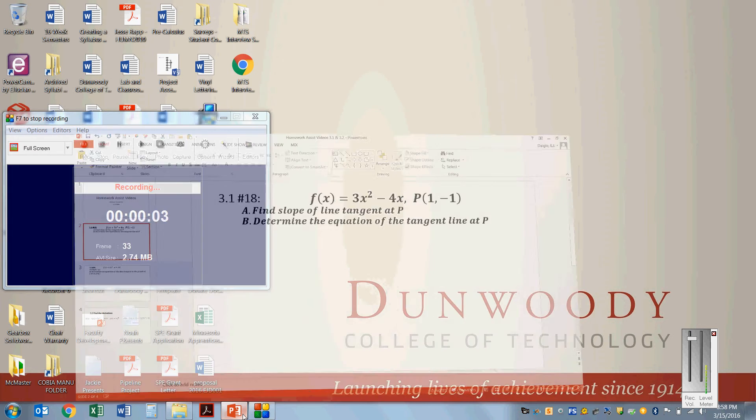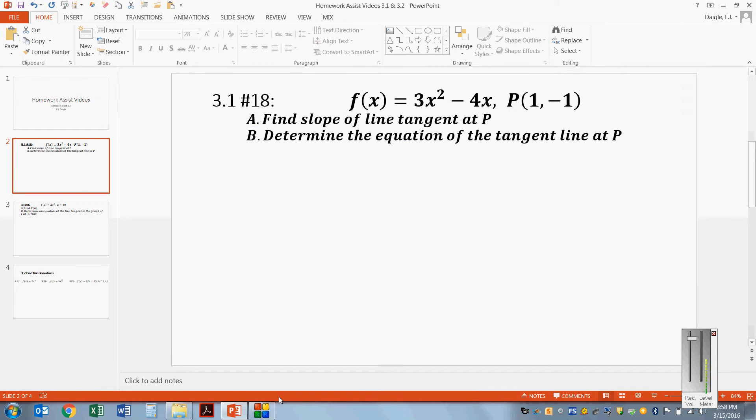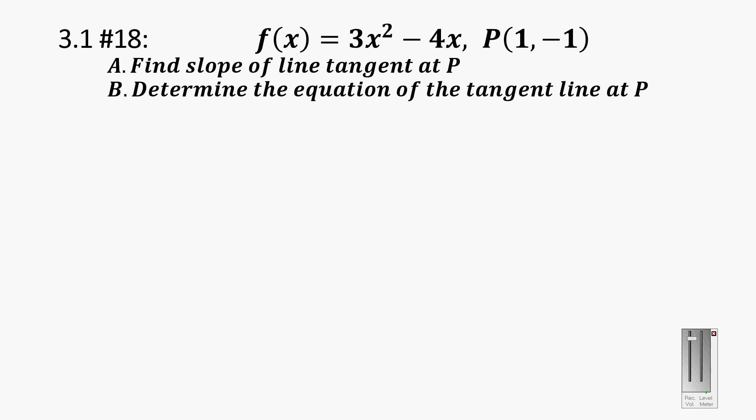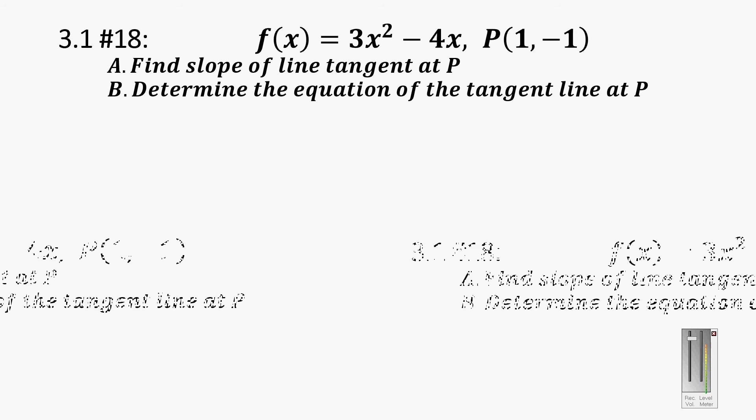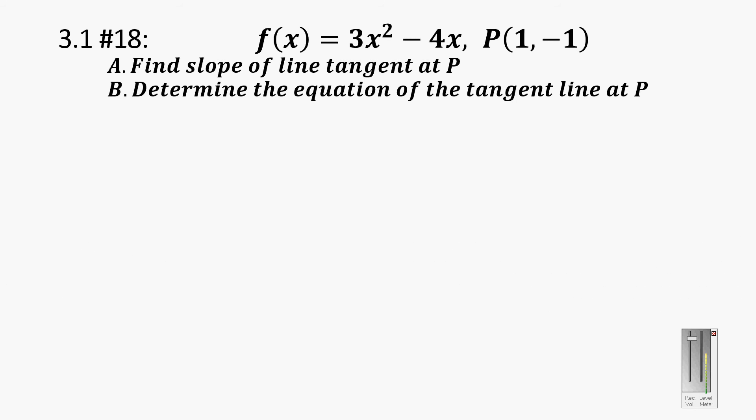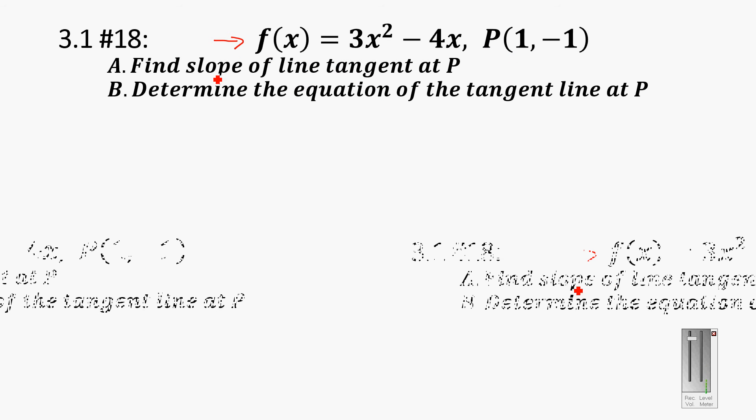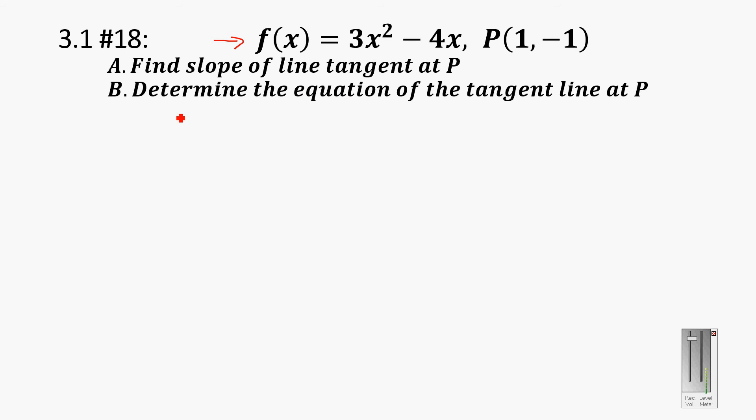Alright, so let's take a look at section 3.1 now. This is where we're going to start to really introduce the derivative and start using the derivative. First and foremost, we have a function up here in number 18, which says f(x) equals 3x squared minus 4x. And we want to find the slope of a line tangent to this function at point P, and we want to determine the equation of the tangent line at point P.